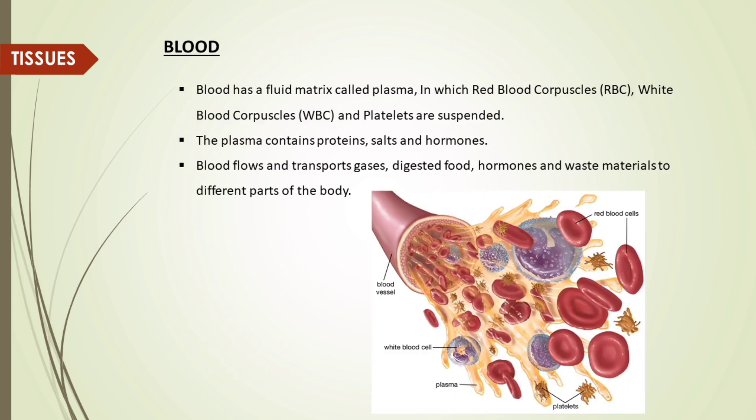Blood has a fluid matrix called plasma, in which red blood corpuscles (RBC), white blood corpuscles (WBC) and platelets are suspended. The plasma contains proteins, salts and hormones. Blood flows and transports gases, digested food, hormones and waste materials to different parts of the body.